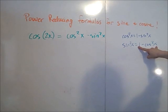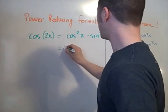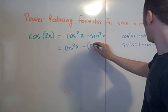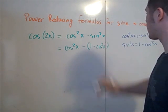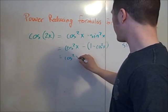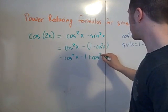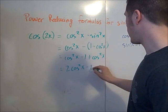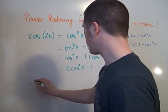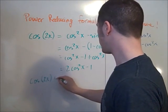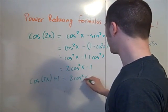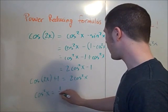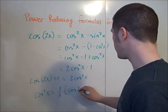Substituting 1 minus cosine squared x in for sine squared x, we get cosine 2x equals cosine squared x minus (1 minus cosine squared x), which simplifies to cosine squared x minus 1 plus cosine squared x, giving exactly 2 cosine squared x minus 1. Now add 1 to both sides: cosine 2x plus 1 equals 2 cosine squared x. Divide both sides by 2, and cosine squared x equals 1 half times (cosine 2x plus 1).